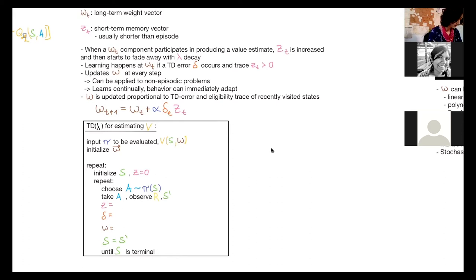which is the discount factor times the trace decay parameter lambda times the eligibility trace plus the gradient at the value estimate function of the state under the parameters. So this is the value function gradient.